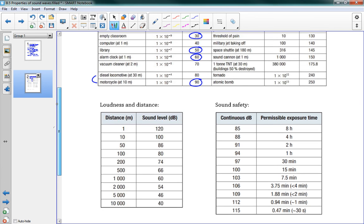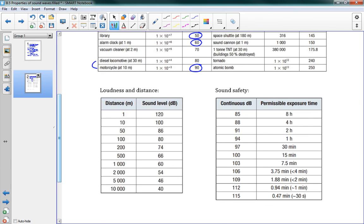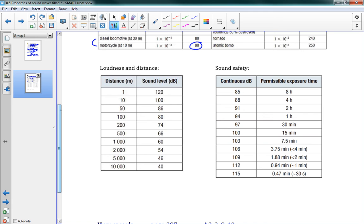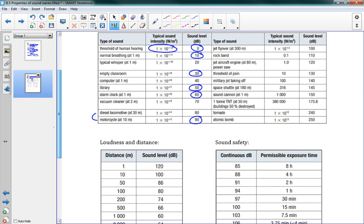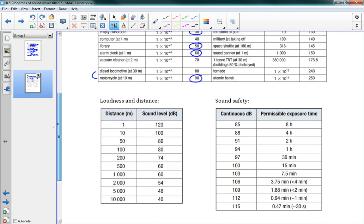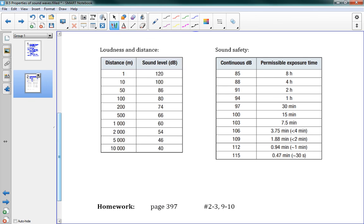Okay, so 88 decibels. That's getting even closer to the motorcycle. You can do that for four hours. 91, two hours. 94, one hour. You see how very quickly the time starts going down. Let's go back up and find a rock band. So if you're at a concert, that's 110 decibels. That's how loud that is. If we go down to our chart here, 110, that's right around here. You can do that for two minutes, less than two minutes, before you start doing permanent damage to your hearing.